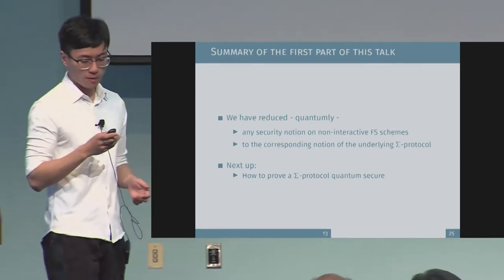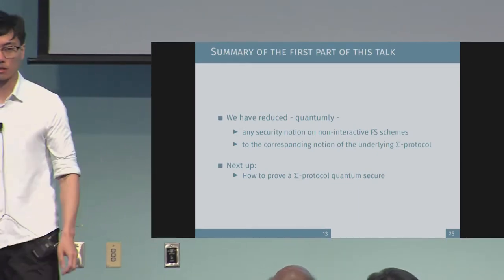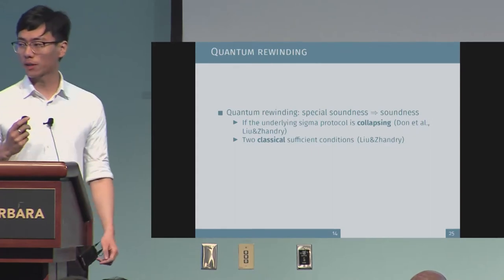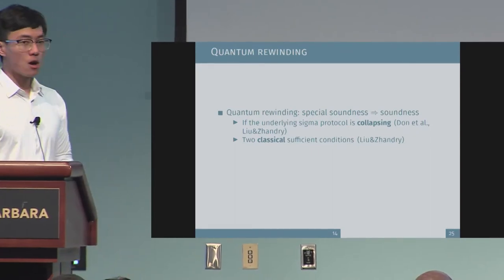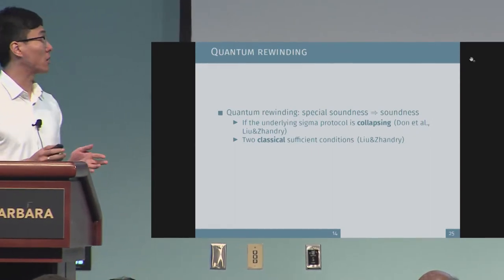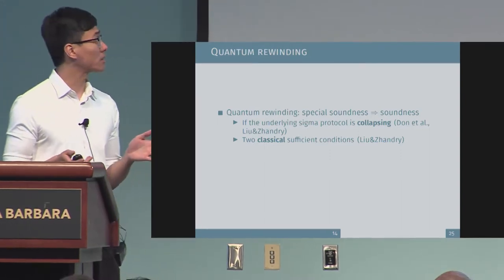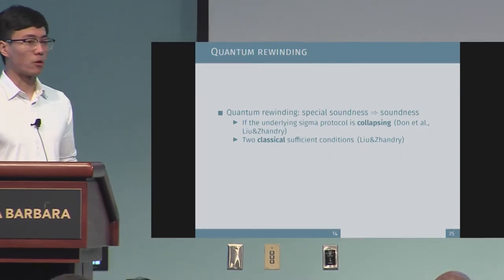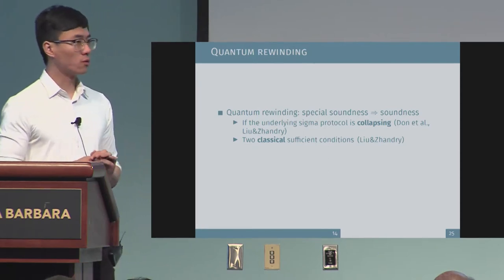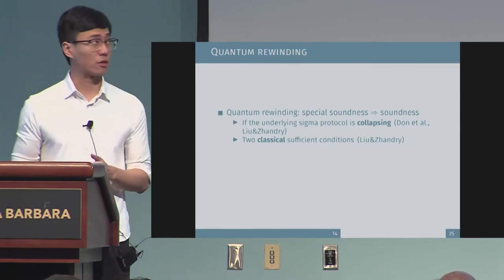Thanks for the first part. I'm going to talk about the second part, which is about quantum rewinding. Quantum rewinding is a technique which allows you to prove that special soundness implies soundness — in other words, it helps you prove that a certain Sigma protocol is a proof of knowledge.